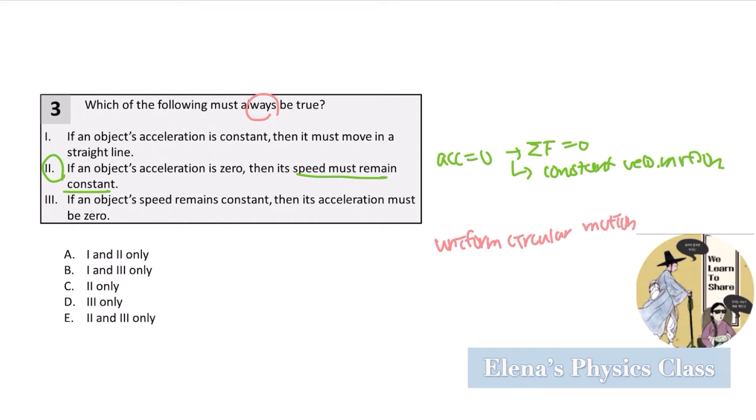Oh, actually, this uniform circular motion shows both of the choices 1 and 3 wrong, because in this case, the speed remains constant. But the velocity is not constant. I mean, it's different in terms of direction, right?